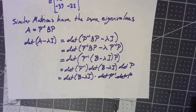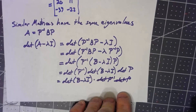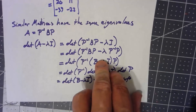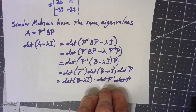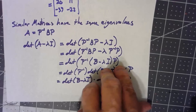So there we go — similar matrices have the same eigenvalues. The fact that they share eigenvalues comes up sometimes, but the concept of similarity itself comes up over and over again. We'll certainly be coming back to and looking at similar matrices as we go on.